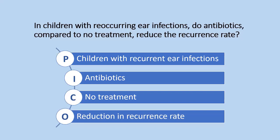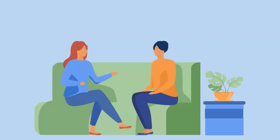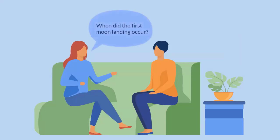Based on your PICO question, you will identify keywords or subject terms to use in database searches. With your research question, you don't want it to be too narrow or too broad. A clearly defined research question will focus your search so that it is more effective and help you identify relevant results.